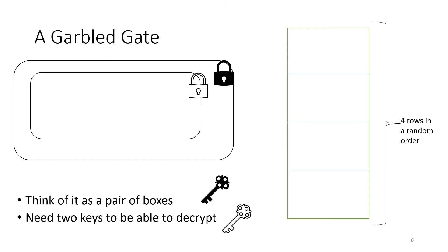Normally in a circuit, the values you have are 0 and 1, or true and false, and you apply whatever operation is at the gate to learn the next output and propagate it along the wire. That doesn't work in a garbled circuit because these garbled values are now separate from the real meaning of true and false. A garbled gate therefore has a specific way it's constructed — it can be thought of as a set of boxes where the two garbled inputs are keys, and only the correct keys will output a valid-looking next value which can then be propagated.